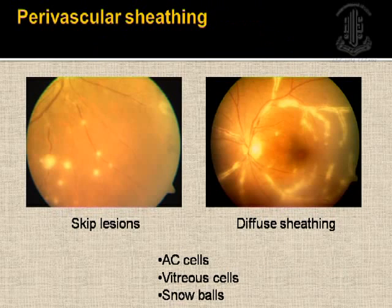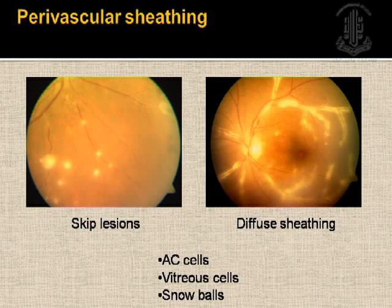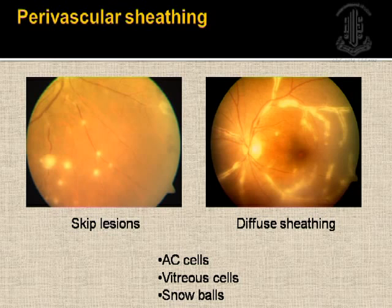Coming to the differential diagnosis of pan-uveitis: if pan-uveitis is associated with exudative retinal detachment, think of VKH and sympathetic ophthalmia. If associated with hypopyon, think of Behcet's disease and HLA-B27 uveitis. If associated with retinitis and vasculitis, think of acute retinal necrosis and Behcet's. If only associated with vasculitis, think of tuberculosis and sarcoidosis. We must also rule out conditions mimicking inflammatory pan-uveitis that are sight- and life-threatening, like endogenous endophthalmitis and intraocular lymphoma.